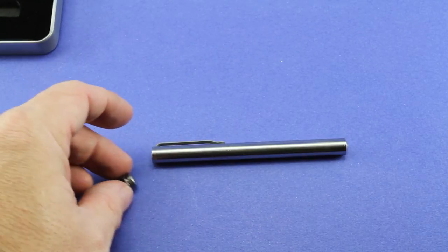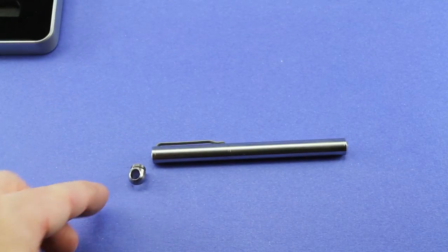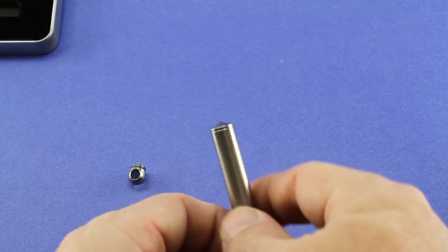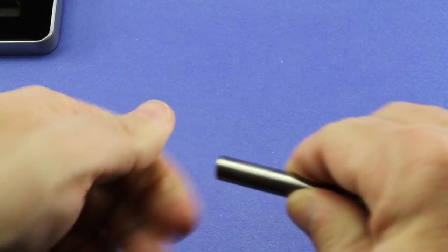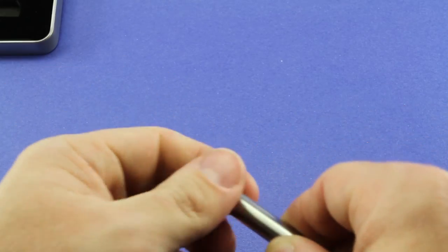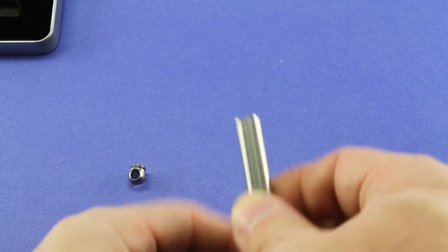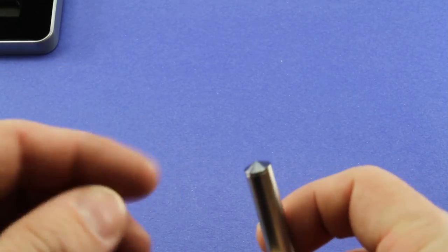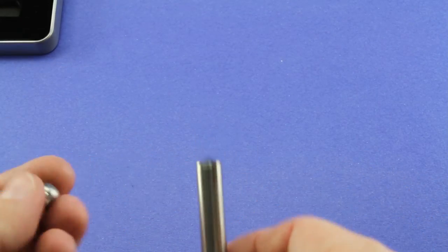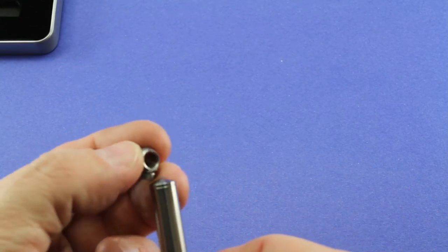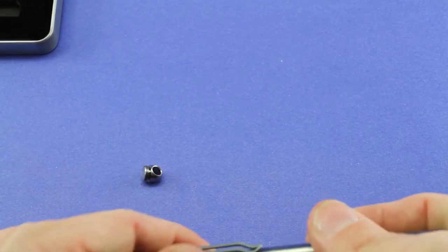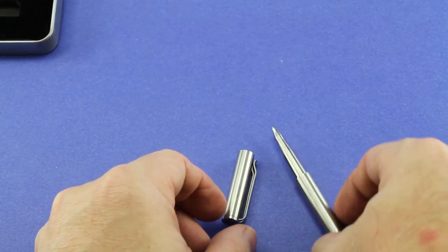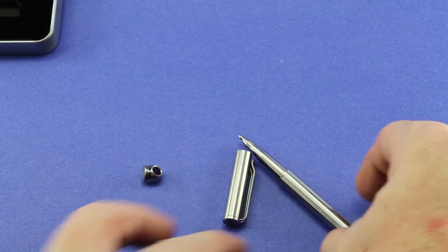Here is the lanyard hole tip. You can remove this tip, you can just unscrew it. I'm not going to go ahead and do that now, but you could replace the glass breaker tip that's on there right now and put on this lanyard hole tip if you wanted to. Just go ahead and lay the pen out there so you can see.